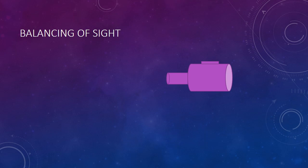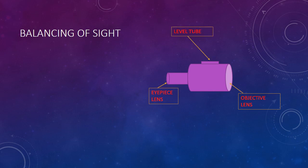Now what is balancing of sight? Let us say this is a typical way of presenting your level instrument, in which we have an objective lens here, then we have an eyepiece lens over here from which you are going to look. This is the lens which is going to face towards your point or the station where the staffs will be held. Then this is the level tube for which you have a bubble — you have to maintain the level here in order to have a correct reading. Now this is your line of sight or the line of collimation, and this is your level tube axis.